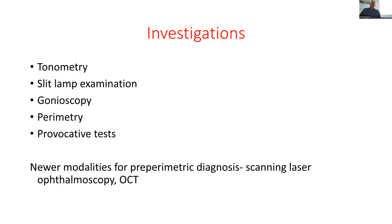Tonometry is the method by which we measure the pressure — it is one of the factors in glaucoma and not the only factor; it may be normal. Slit lamp examination is very important. Gonioscopy measures the angle. Perimetry documents the visual fields. There are also provocative tests, not performed much nowadays, and newer modalities — scanning laser ophthalmoscopy or OCT — which are not subject-dependent, not patient-dependent, not doctor-dependent. They take less time, are more accurate, reproducible, and unlike visual fields, are not dependent on the learning curve of the patient and the doctor.